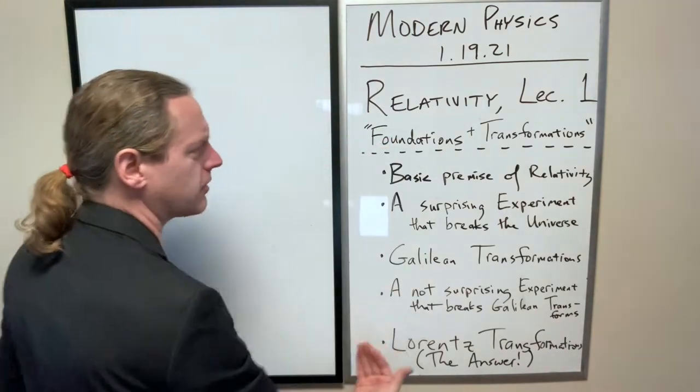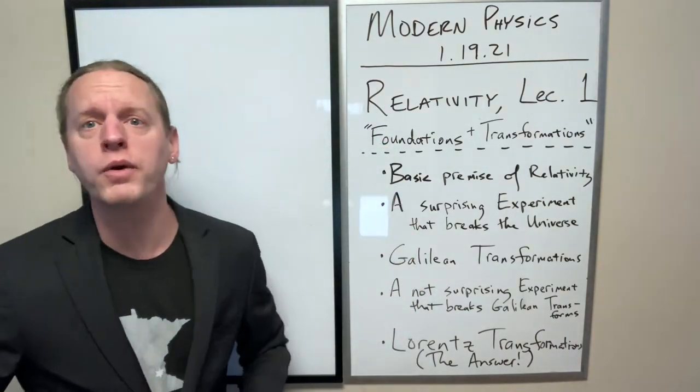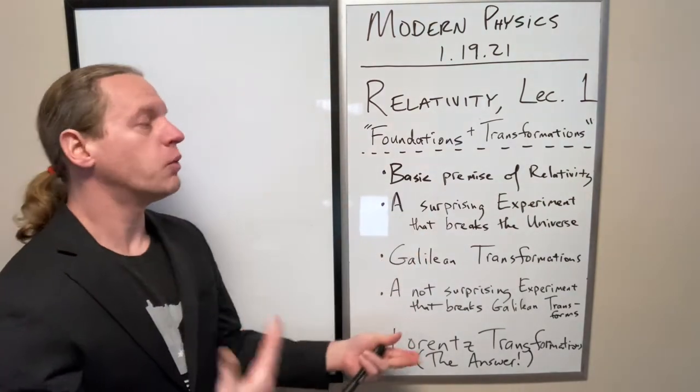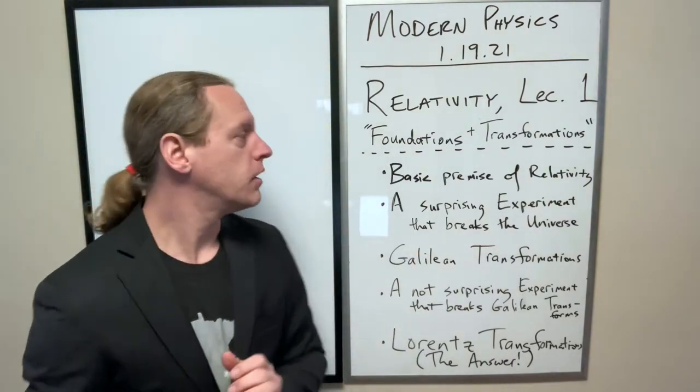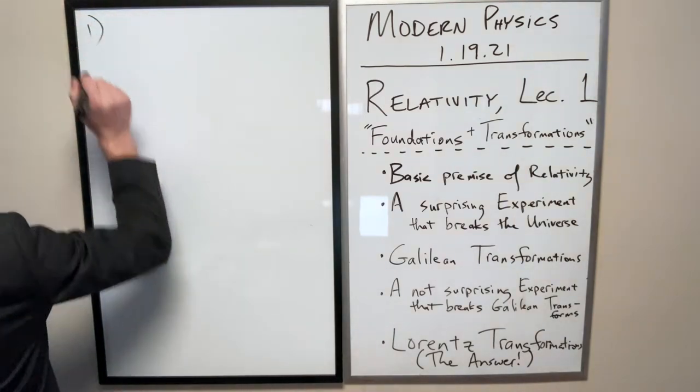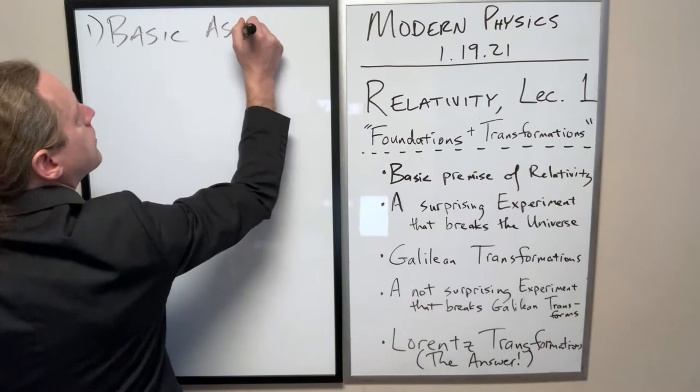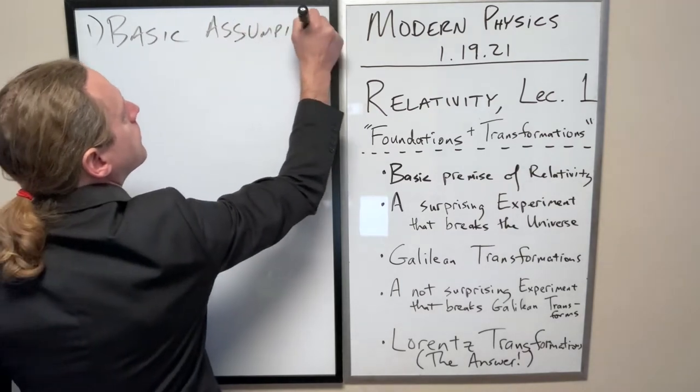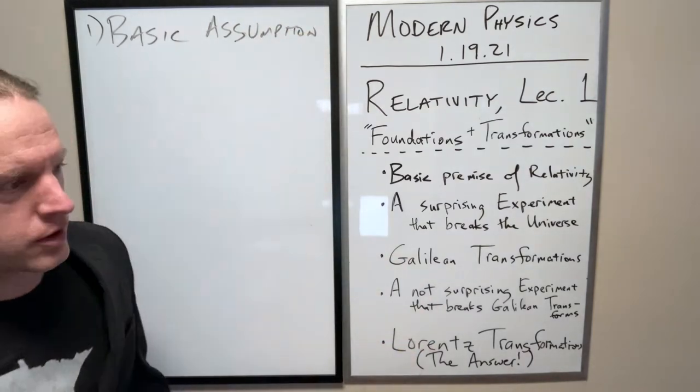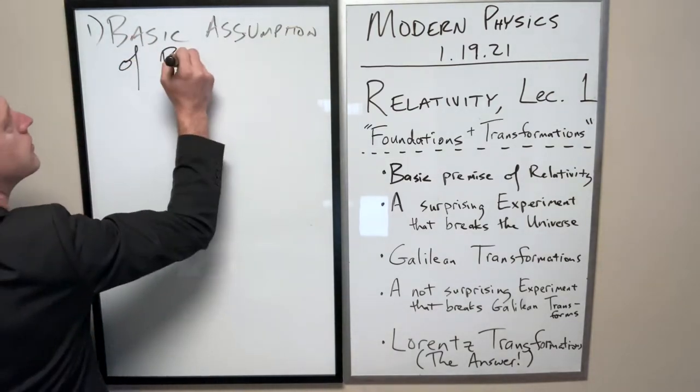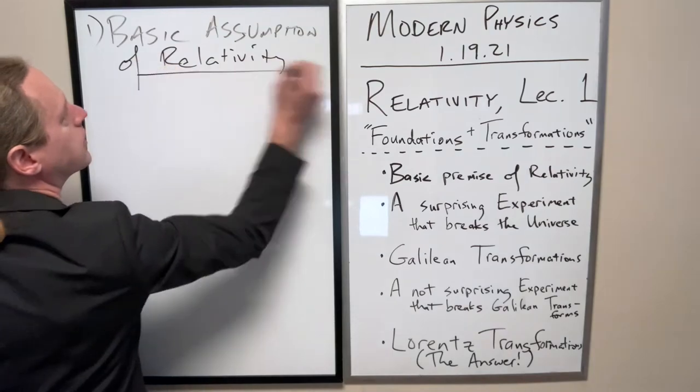So hopefully this presents at least some cohesive story of why we're going to want to use relativity in the future and where the classical way of thinking breaks down. So let's go ahead and start with number one, the basic assumption of relativity.